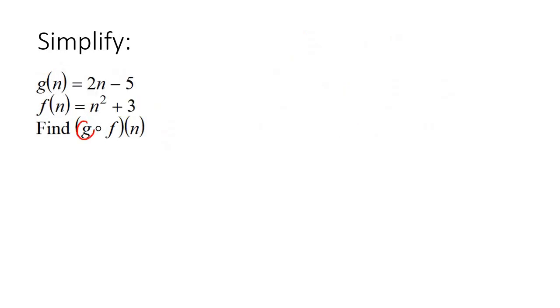Here's our next example. So you always start with the first letter, which is g. Go write its equation down. Highlight the letter. And then just replace that with this. So it's going to be 2. Then in brackets, you're going to say n squared plus 3 and then minus 5.